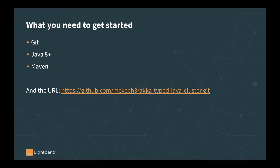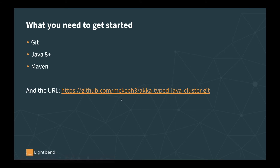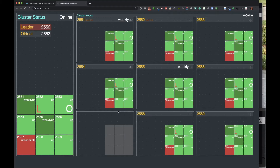To run this project you're going to need just a few things: you'll need Git, you'll need Java 8 or above, and you'll need Maven. Here's the link to the GitHub repo for the sample project - it's under my name in GitHub, my username is mckee-h3, and the project is called akka-typed-java-cluster.